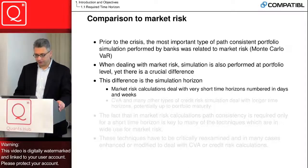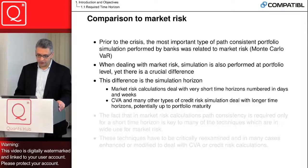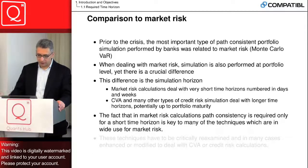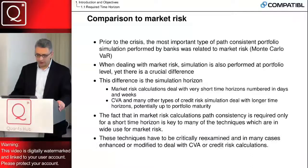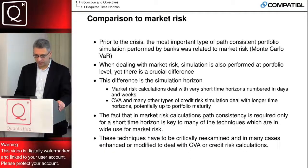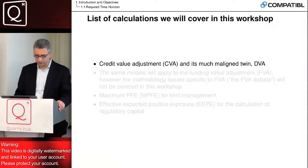CVA and many other types of credit risk simulation deal with longer time horizons, potentially up to portfolio maturity. The fact that market risk simulation's path-consistency is required only for a short time horizon is key to many of the techniques which are in very wide use for market risk. These techniques have to be critically examined and, in many cases, enhanced or modified to deal with CVA or credit risk calculations.